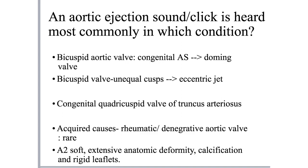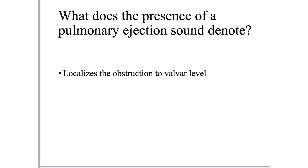Another less common cause of an aortic ejection sound is truncus arteriosus - usually the congenital valve is quadricuspid or tricuspid, but when quadricuspid there is unequal force distribution giving rise to an eccentric jet and an ejection sound. Acquired causes of aortic stenosis like rheumatic or degenerative AS very rarely produce an ejection sound, because extensive anatomic deformity, calcification, and excessive rigidity of the leaflets prevent its production.